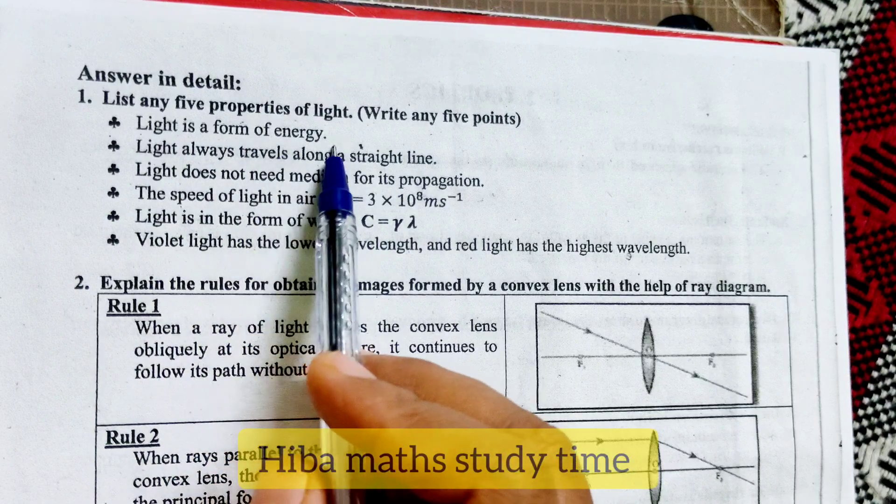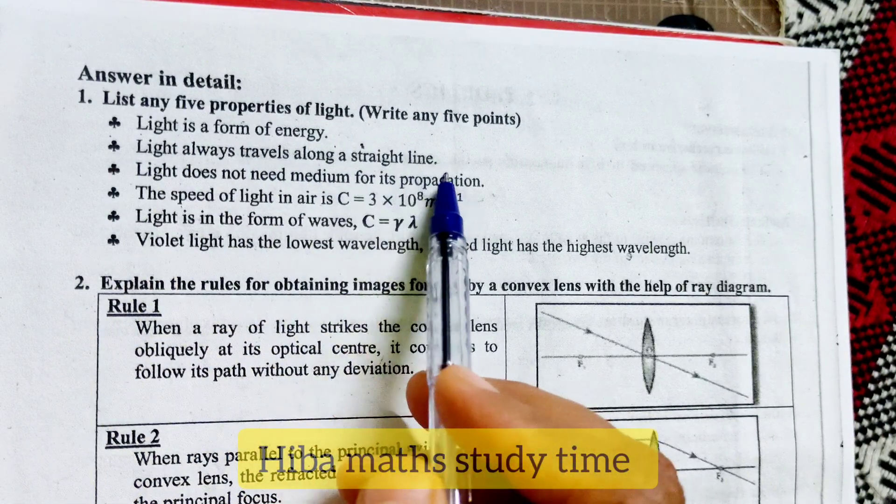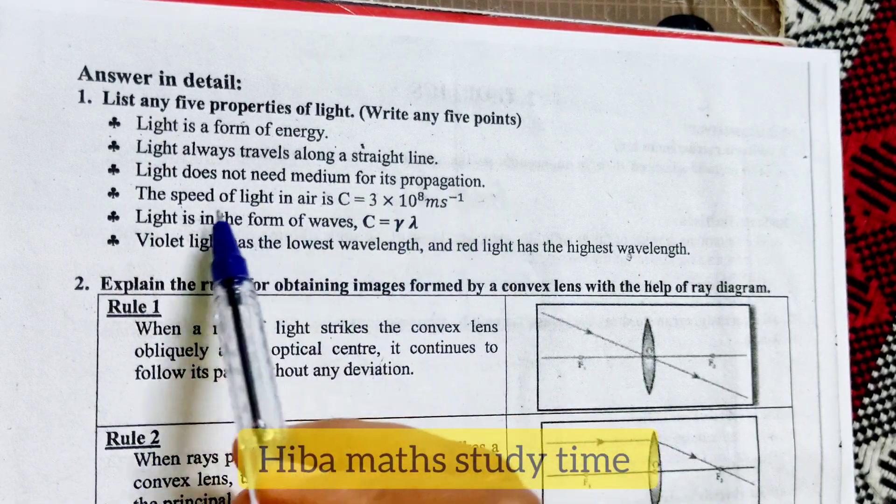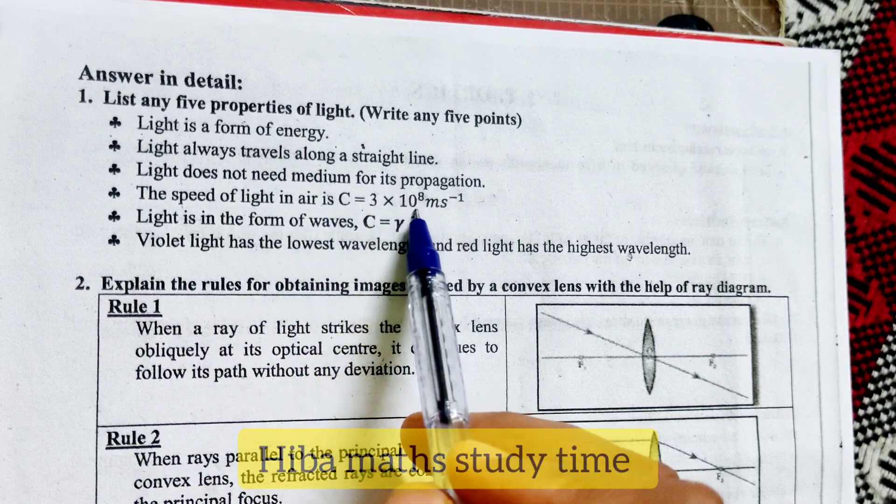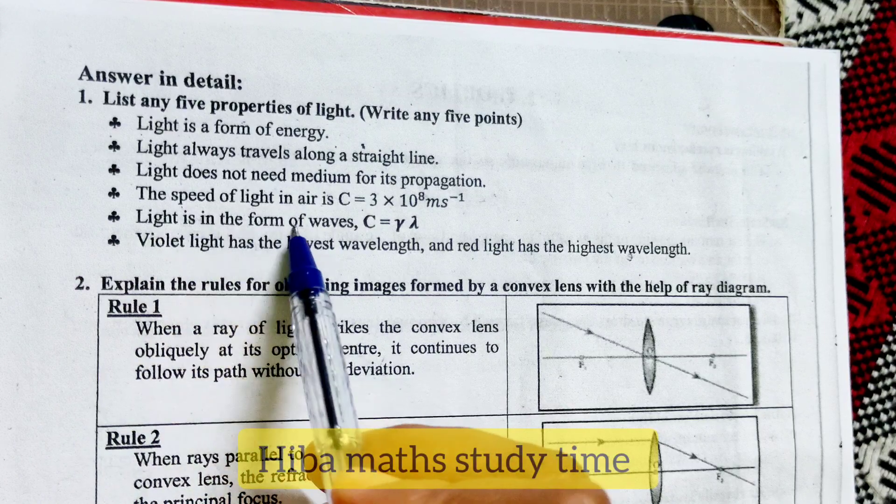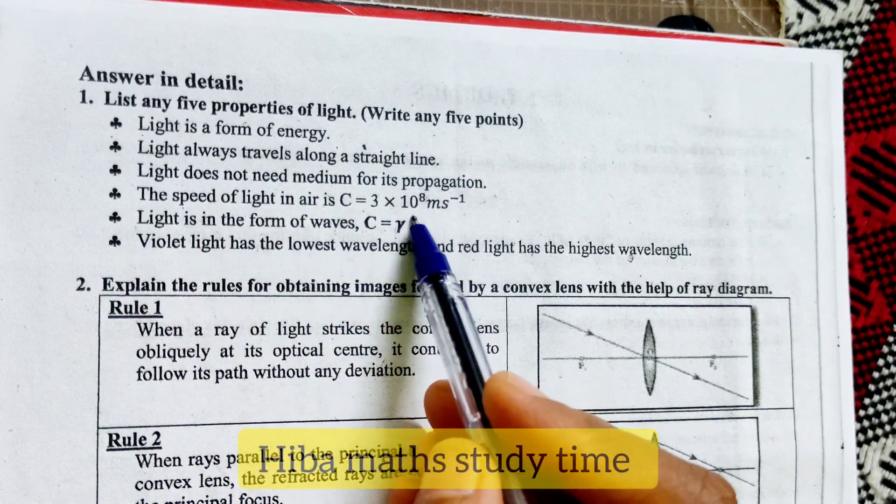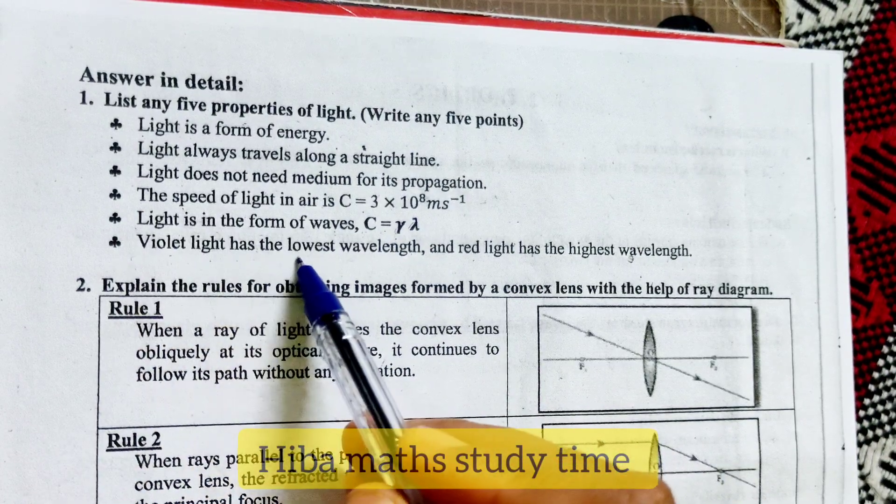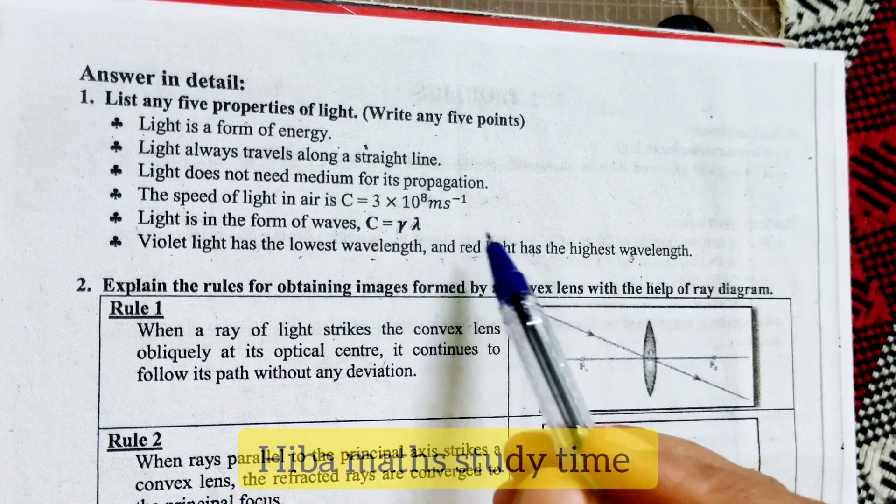Light is a form of energy. Light always travels along a straight line. Light does not need medium for its propagation. Speed of light in air is c equals 3 into 10 power 8 meter per second. Light is in the form of waves, c equals nu lambda. Violet light has the lowest wavelength and red light has the highest wavelength.